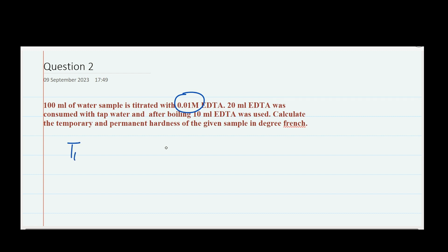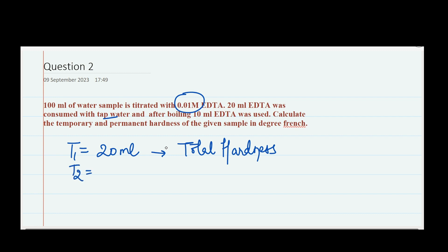In this question there are two readings. Titration one reading is 20 ml — this is going to give you the total hardness of the water sample. Then in order to find the permanent hardness, you boil the water, perform the same titration, and get a reading of 10 ml — this gives you the permanent hardness reading, since you have already removed the temporary hardness on boiling. We have to calculate both hardnesses in degree French.